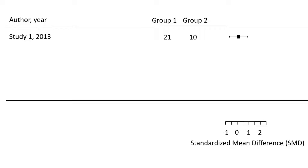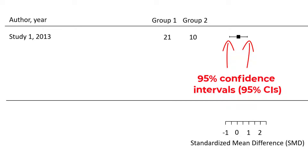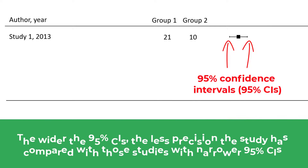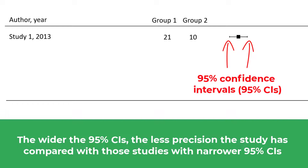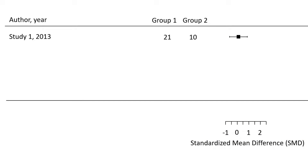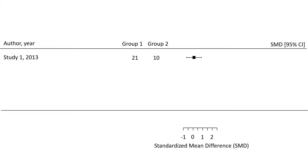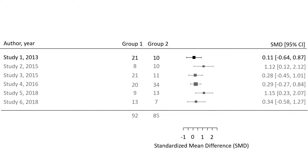You will also see horizontal lines either side of the effect size. These are the 95% confidence intervals. Usually, the wider the confidence intervals, the less precision the study has compared to those with narrower confidence intervals. The 95% confidence intervals for study 1 range from negative 0.64 to positive 0.87. As well as being graphically displayed on the forest plot, they are almost always shown in numeric form on the far right side of the figure. Let me now reveal the rest of the data for the other studies.